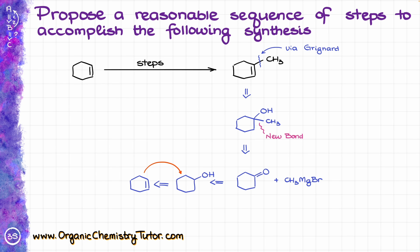To go from cyclohexene to cyclohexanol, we can use a whole bunch of different methods — anything from simple hydration, which is just water in sulfuric acid, to hydroboration-oxidation, which would give the same product in this case since the molecule is completely symmetrical, so we are not worried about regioselectivity.